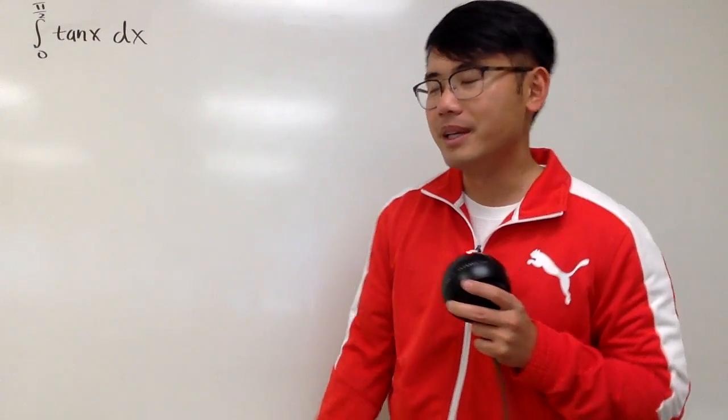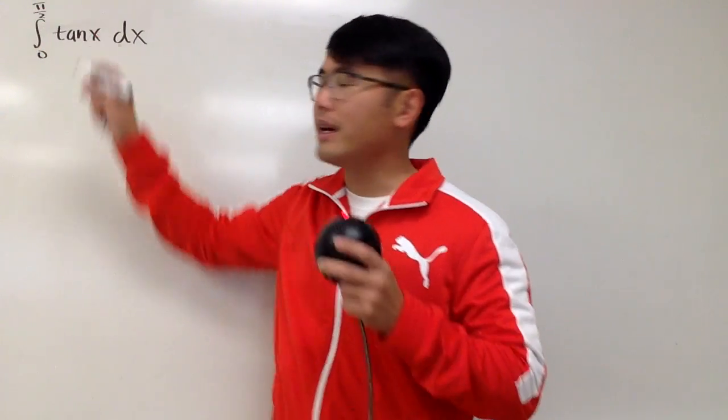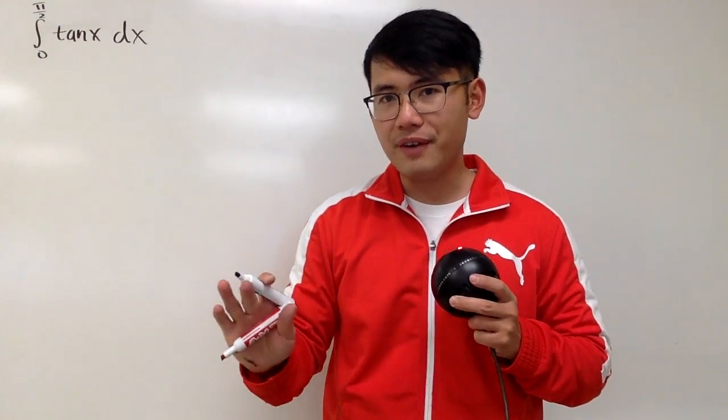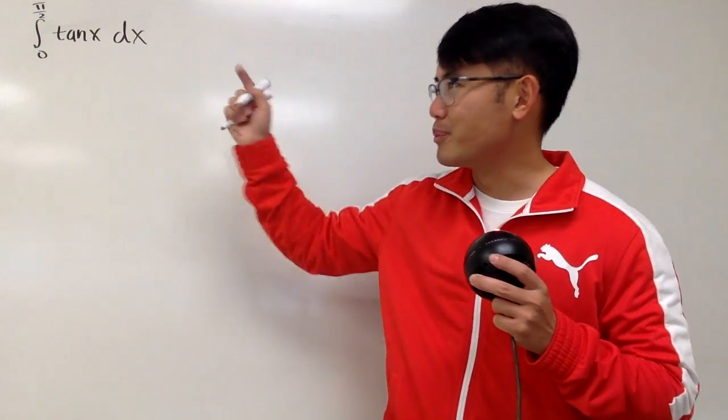This right here is actually improper, because if you put pi over 2 into x, tangent of pi over 2 is not defined. You actually have a vertical asymptote. That's why it's improper.